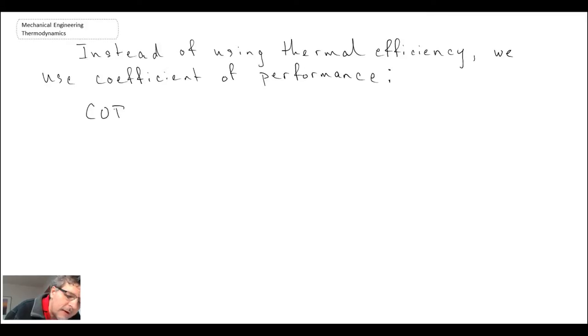Coefficient of performance is written in capital letters as COP. We put a subscript for either refrigeration or heat pump—R for refrigeration. It's defined as the amount of heat coming out of whatever system we're trying to cool, divided by the amount of work we have to put in. In the case of a heat pump, it would be our desired output. Here we're trying to heat a space, so it would be Q_H divided by the work going in.